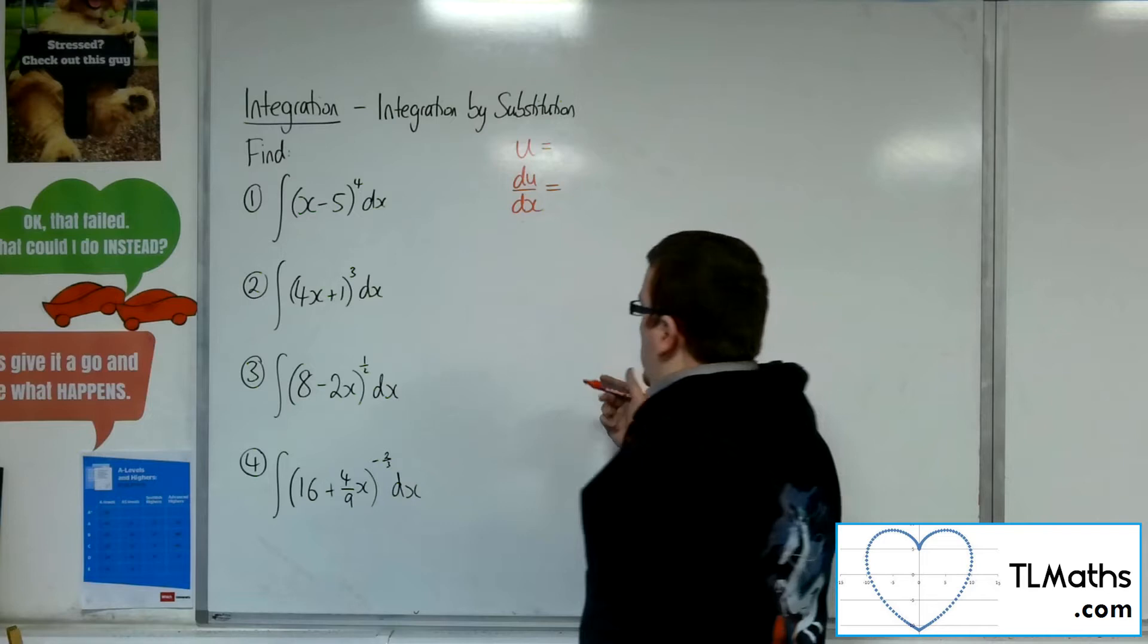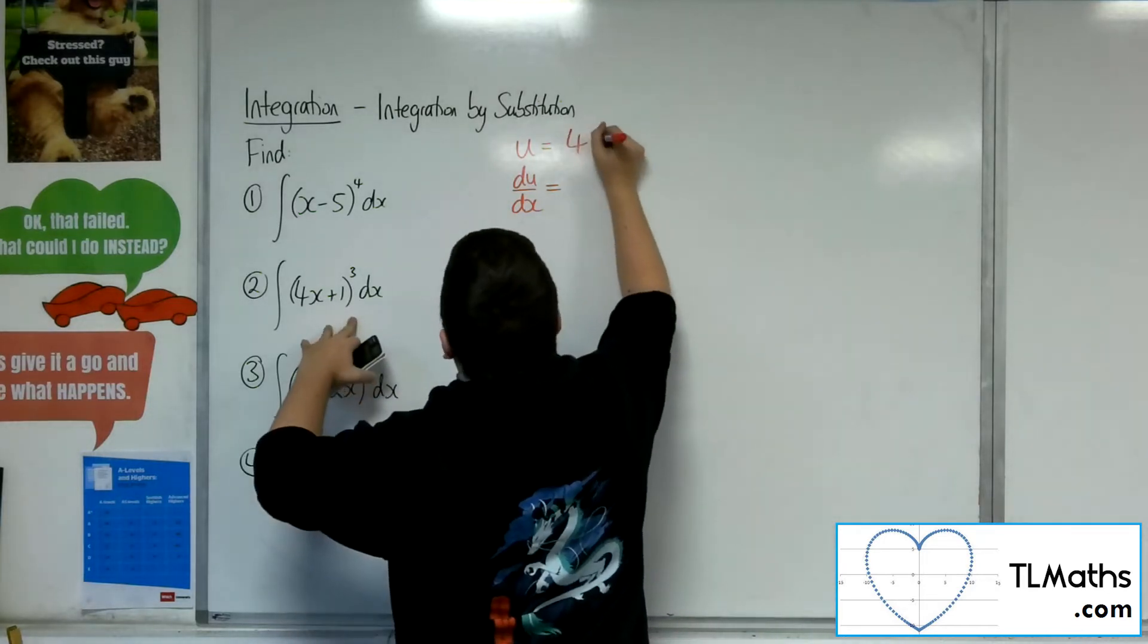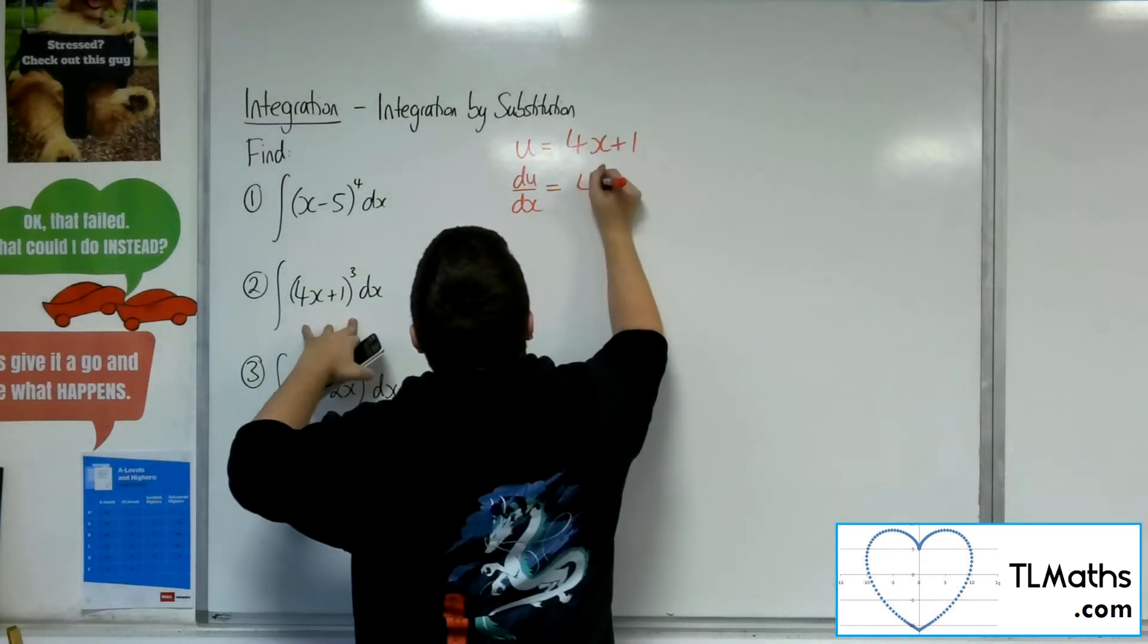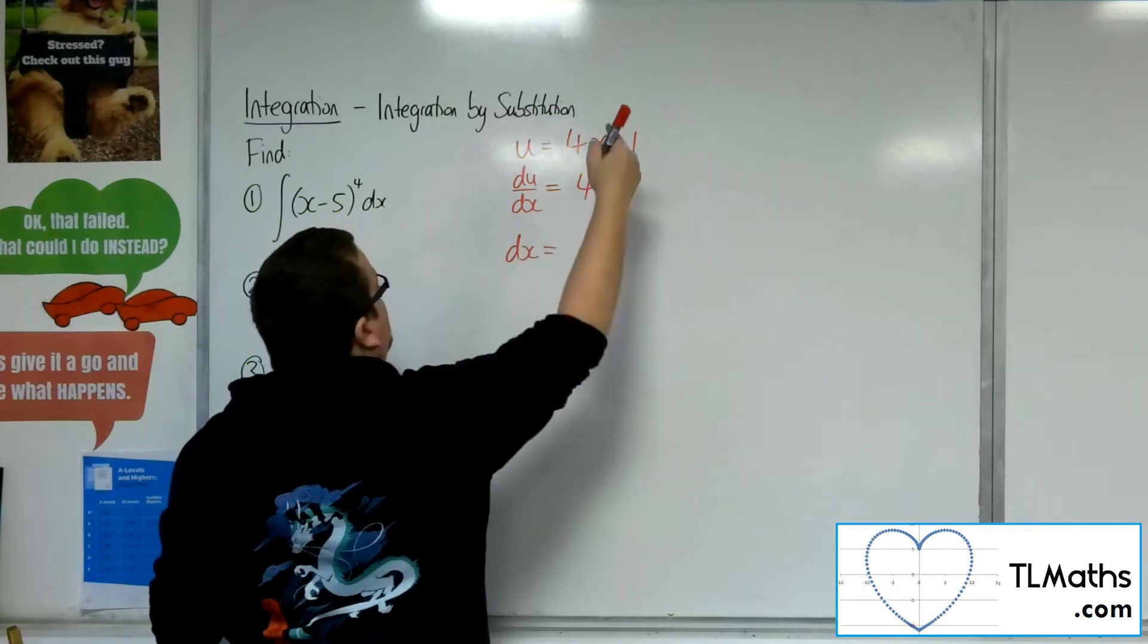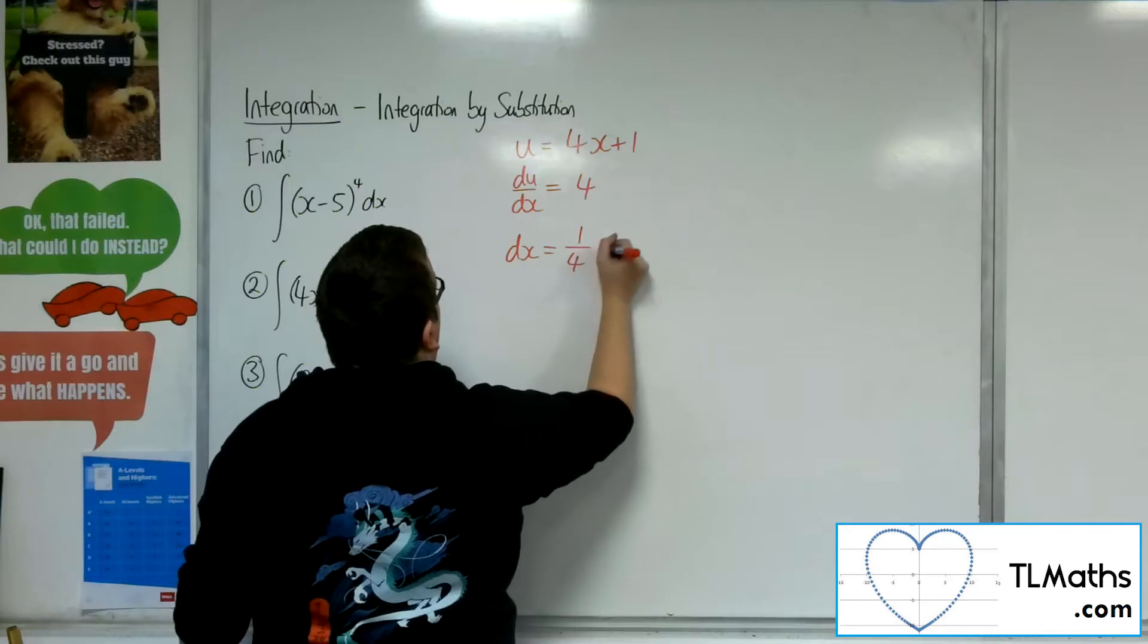So number 2, 4x plus 1 cubed, so the u this time is 4x plus 1. Differentiate that, you get 4. Now to rearrange that, we would multiply both sides by the dx, divide both sides by the 4, so we'd have a quarter du.